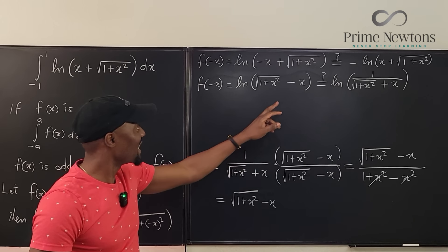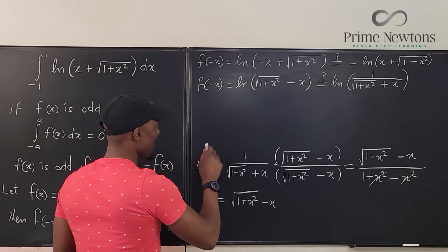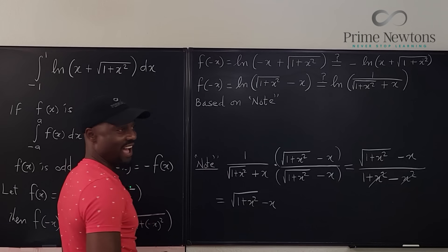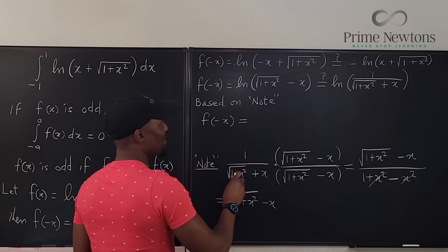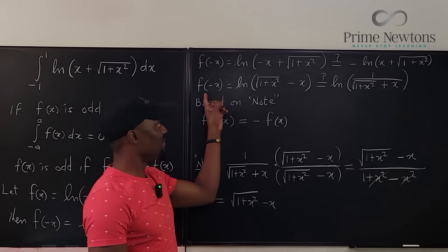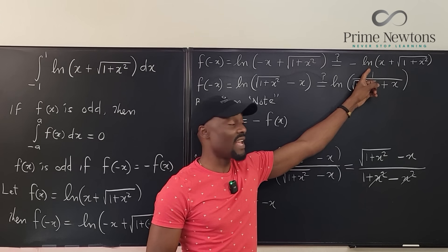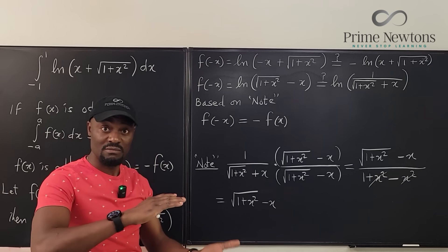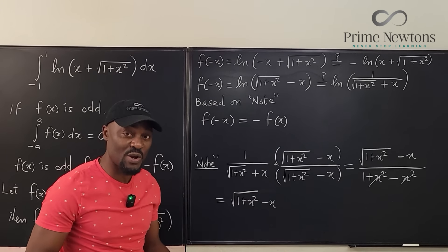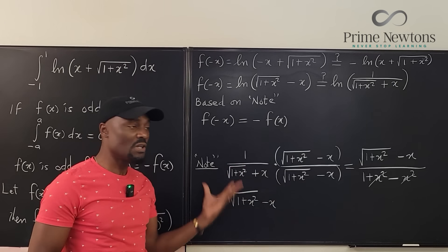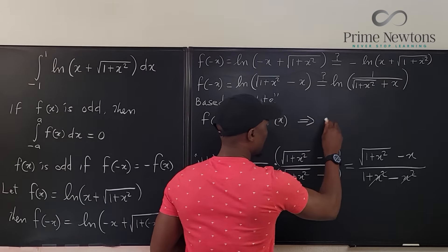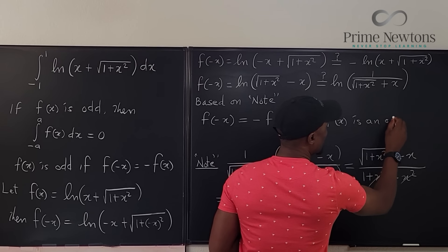That's true. So, I can confidently say that this is true. Based on note, f of negative x is equal to negative f of x because we've established it just by doing the conjugate. This is a strategy I've seen used in many of the advanced exams. You want to make sure you recognize it. Don't freak out when you see a complicated integral. Try to just do something like this and somehow they're going to save you.